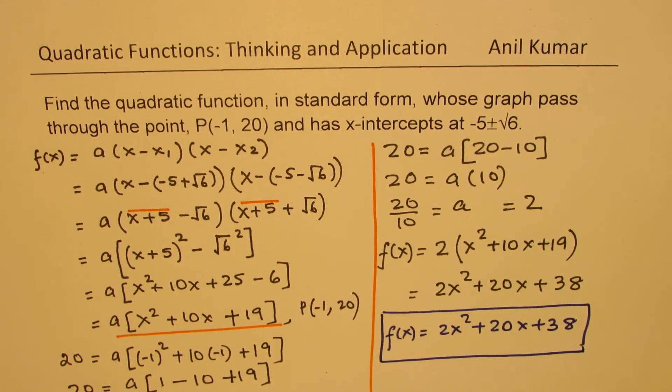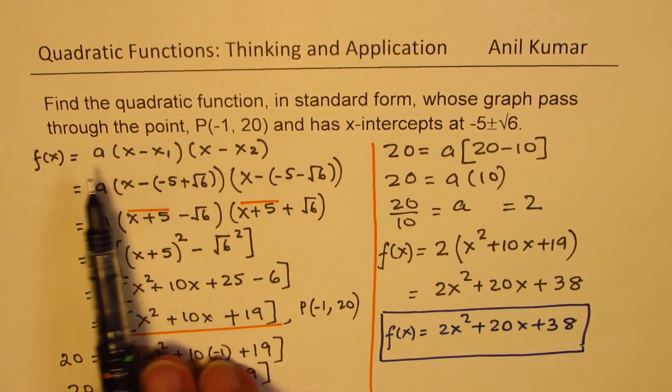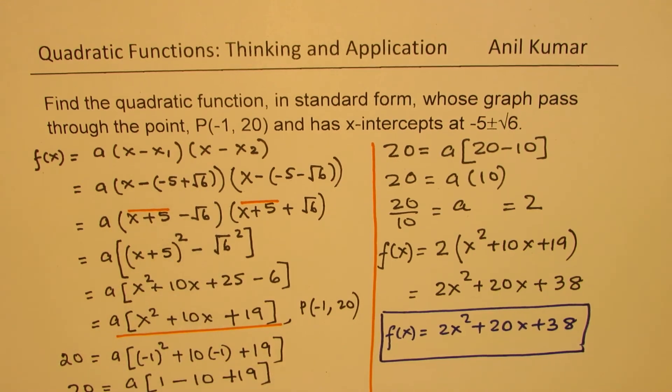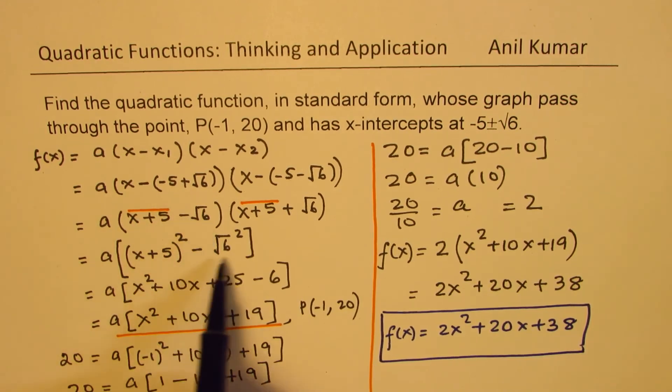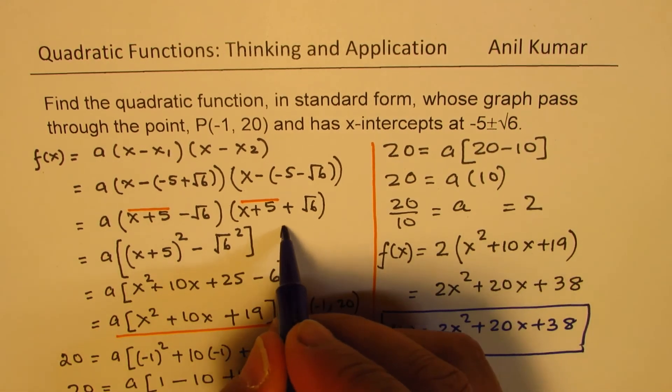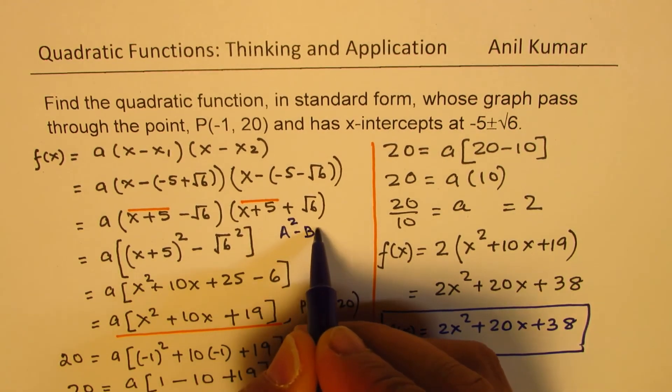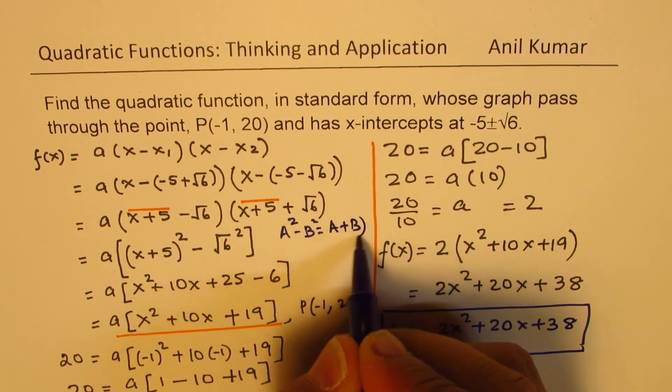So I hope the steps are absolutely clear. The idea here is that these are the two roots, and we can start with the factored form of the equation. Here, we have applied the strategy that (a + b) times (a - b) is a² - b². Since we know a² - b² is basically equal to (a + b) times (a - b).